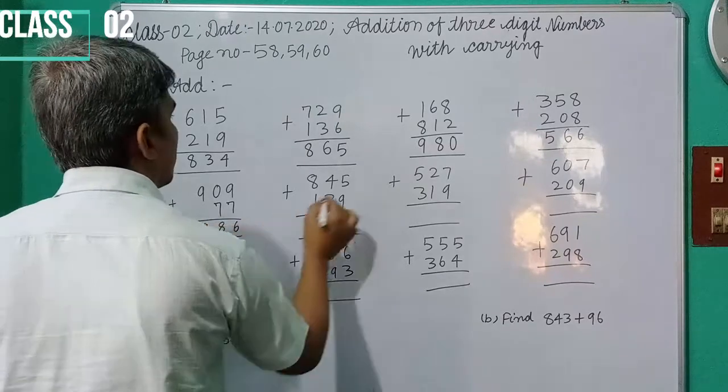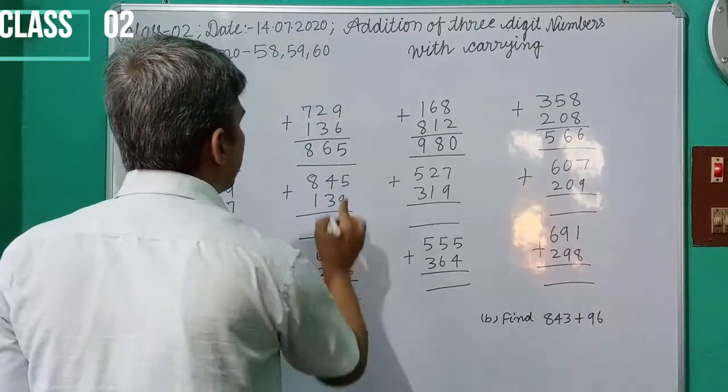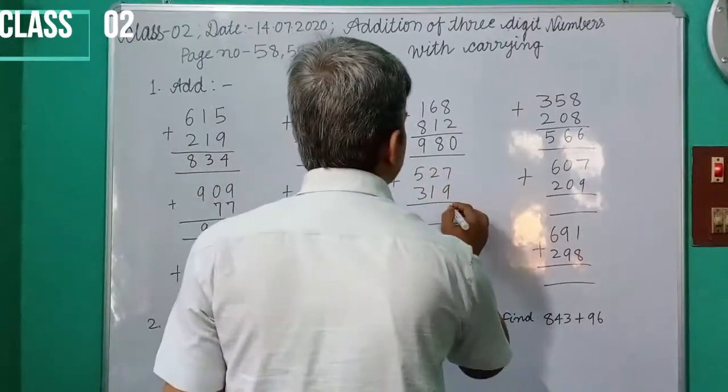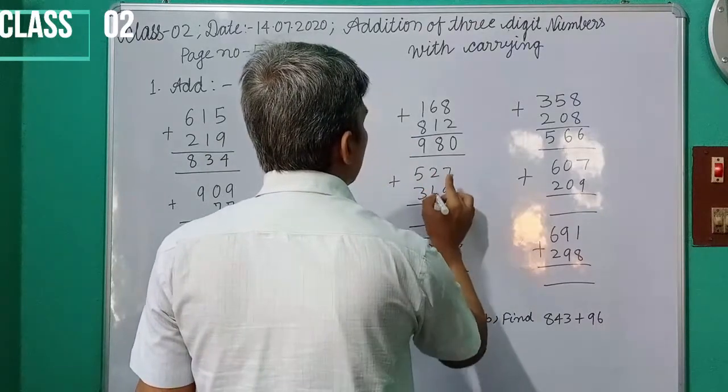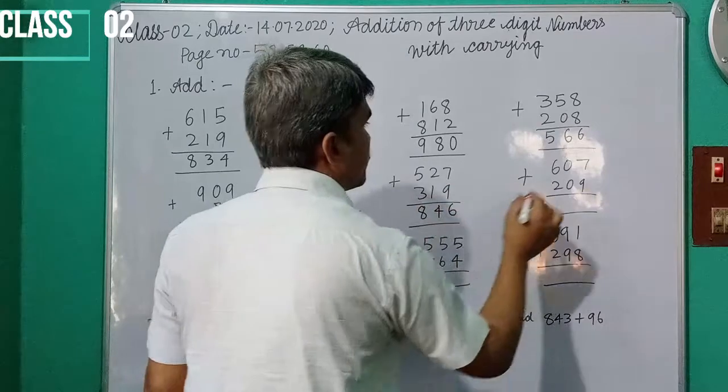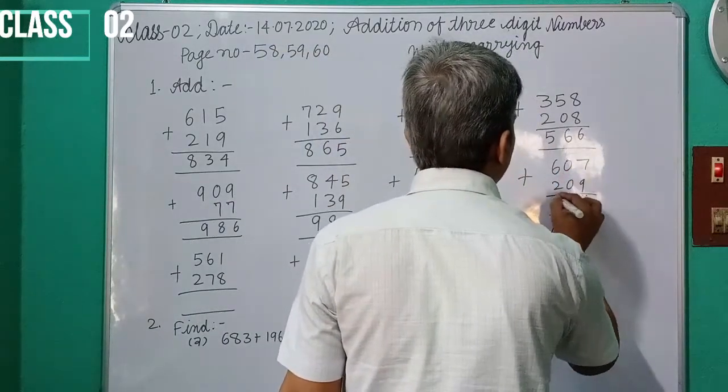Then 899 plus 97 equals 996. 8 plus 8 equals 16, write down 6 in ones place. 5, 1, 6. 3, 2, 5. 9 plus 7 equals 16, write 6, carry 1.